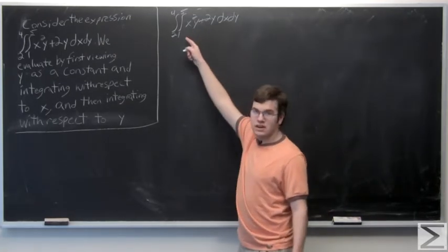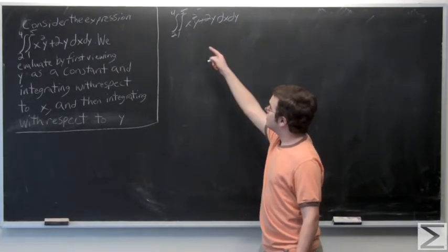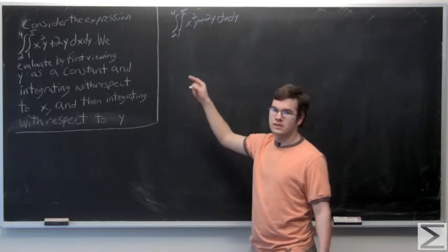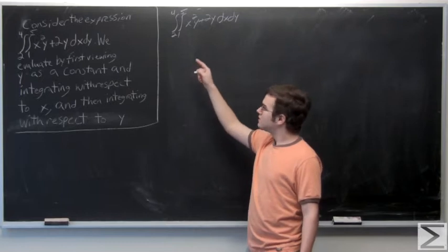So when we integrate x squared y, we notice that due to the power rule, x squared, when integrated, becomes x to the cubed over 3.